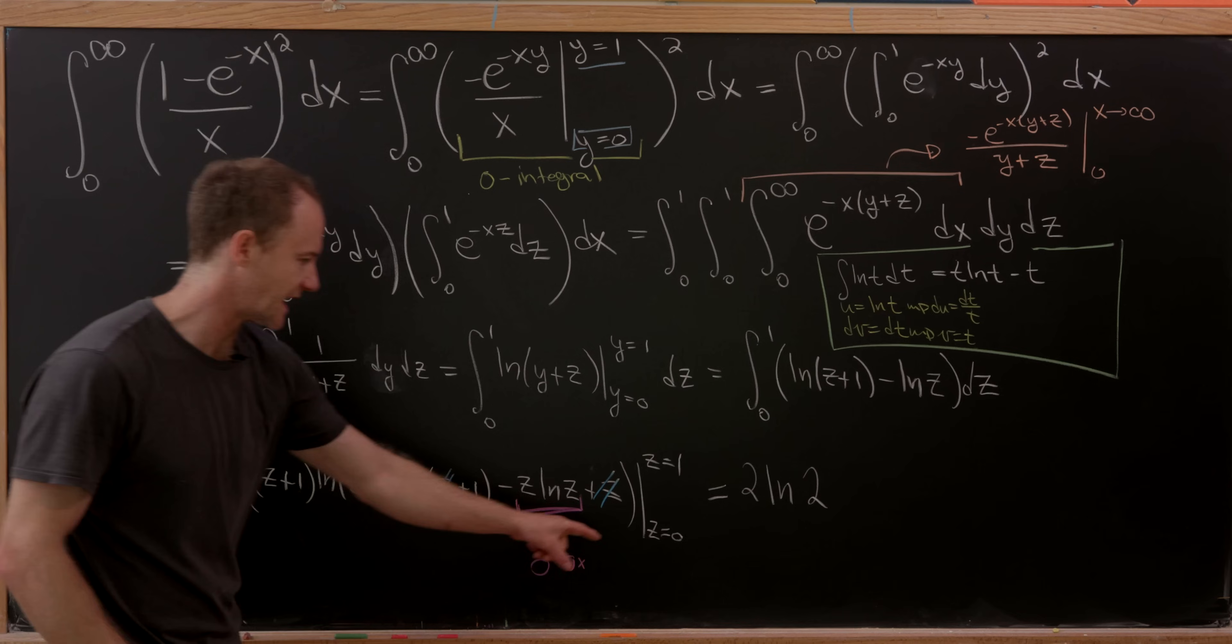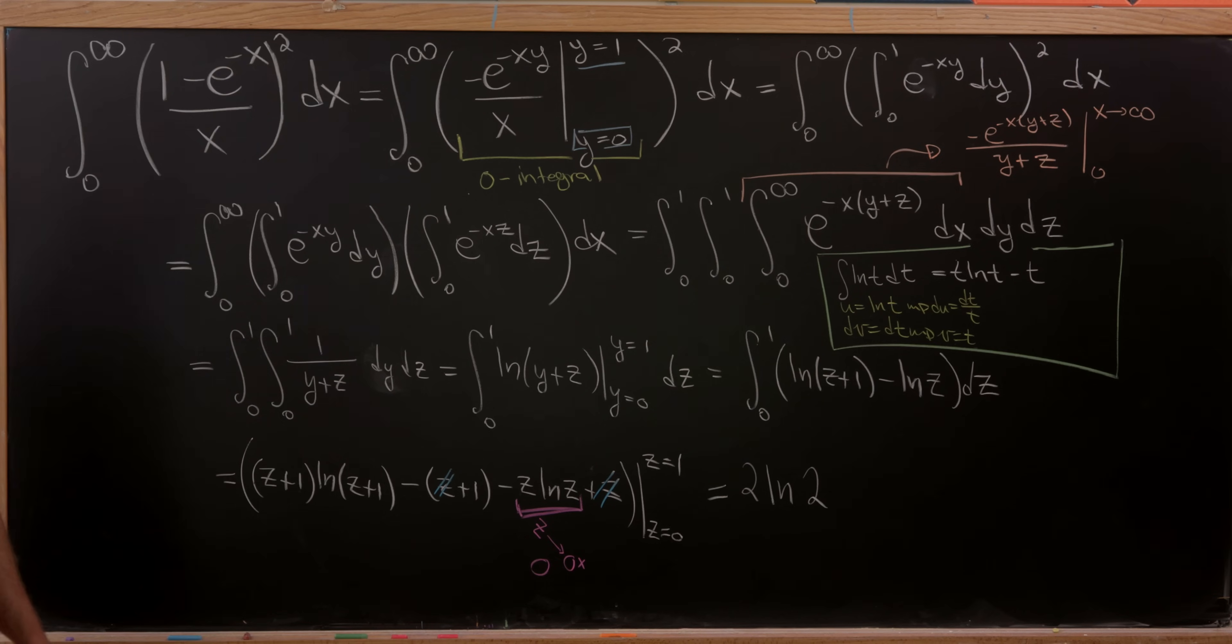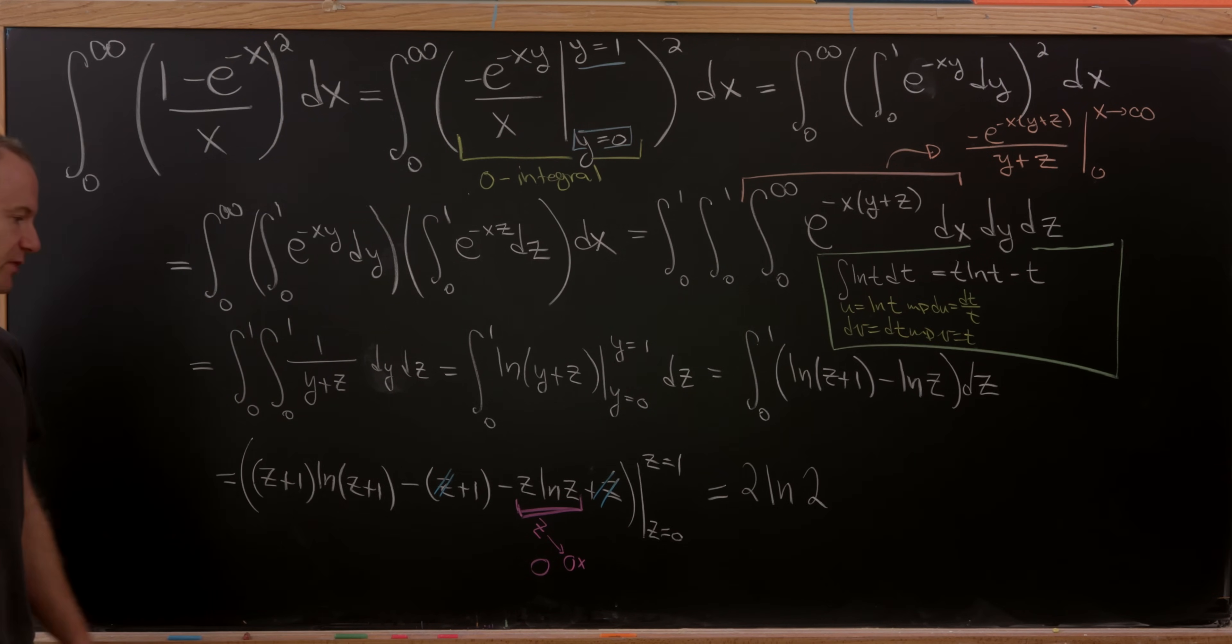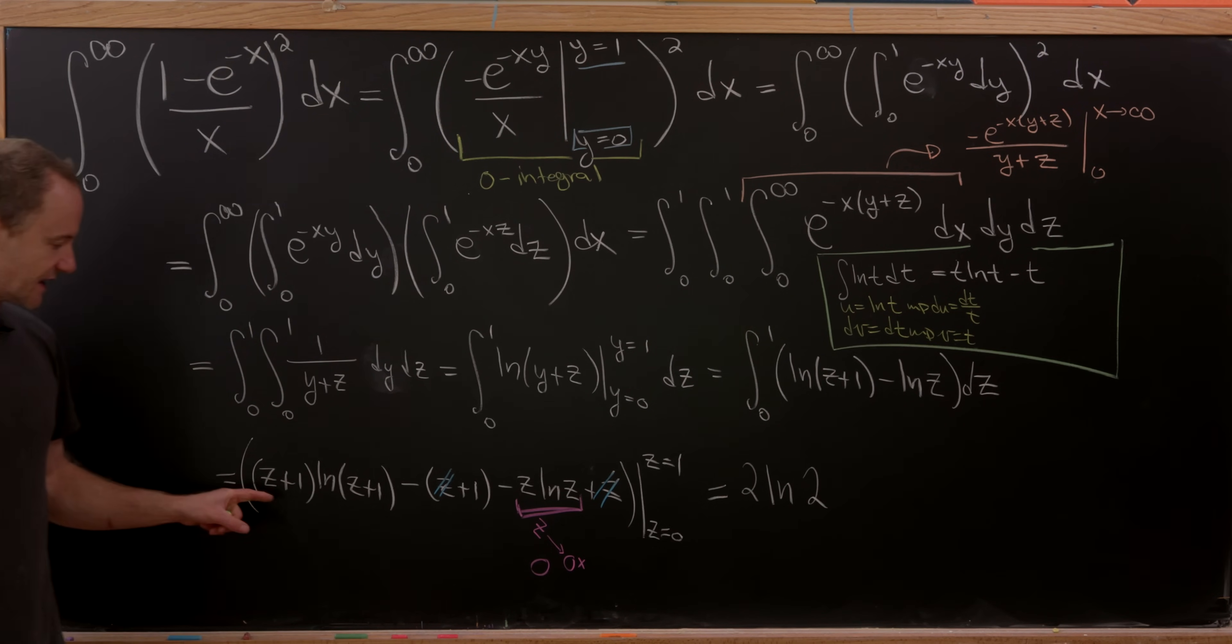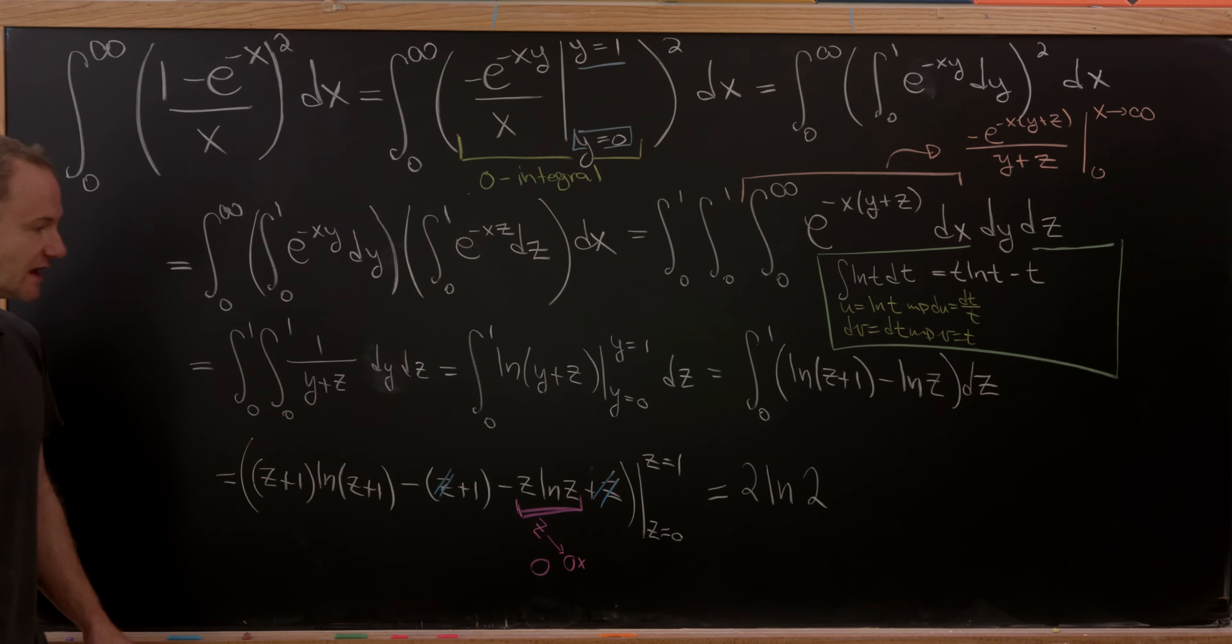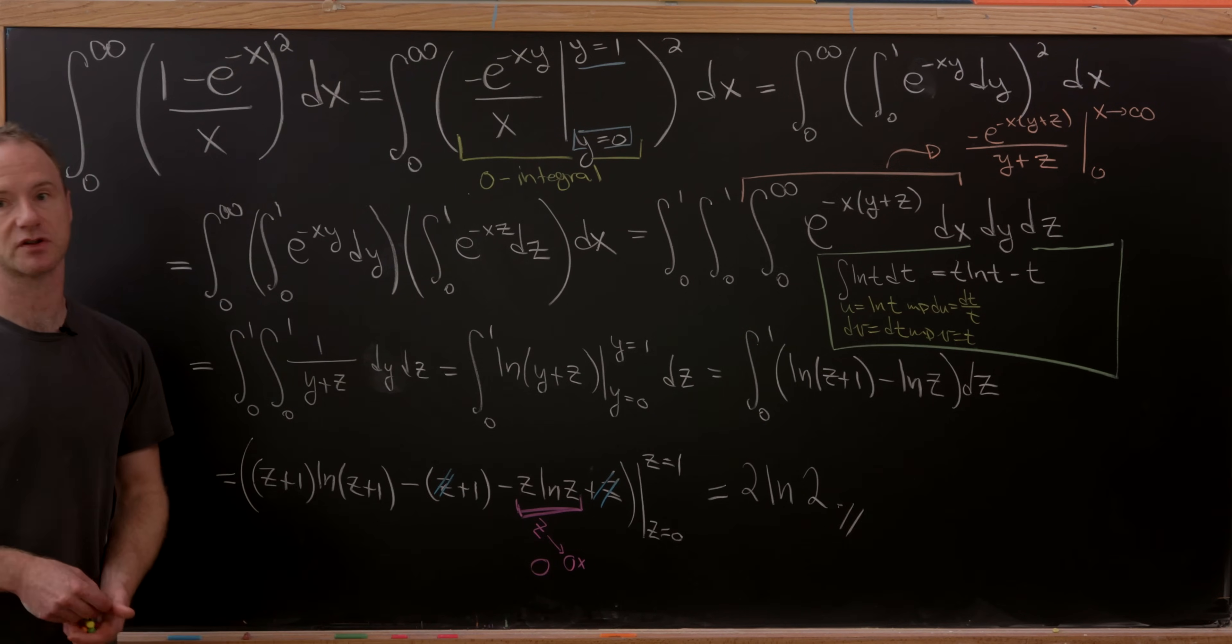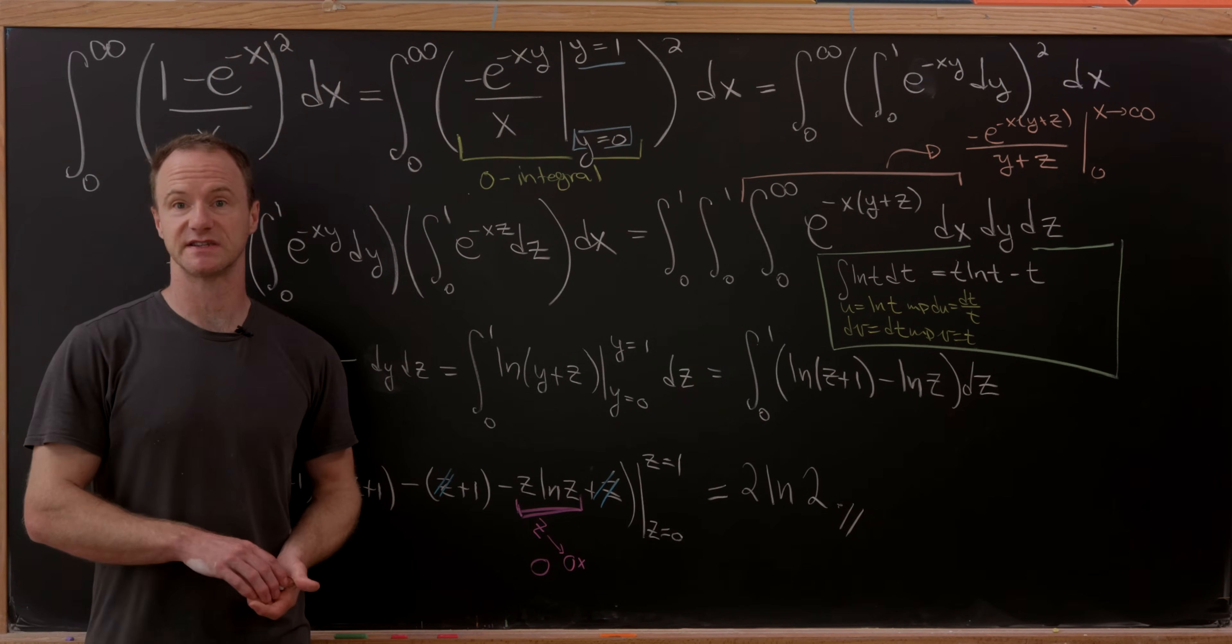But that minus 1 is going to get canceled when we have this z equals 0 plugged in as well, just because it's a constant. So there's no contribution from this part either. So now plugging in z equals 0 here, we get natural log of 1, which is 0. So in the end, we're totally done here, and we have our final answer, which is 2 ln(2). And that's a good place to stop.